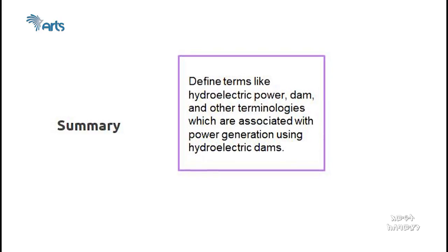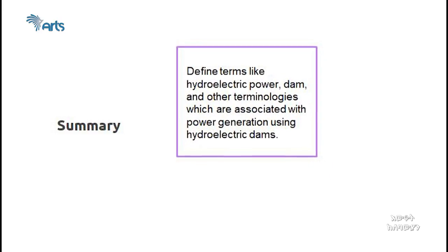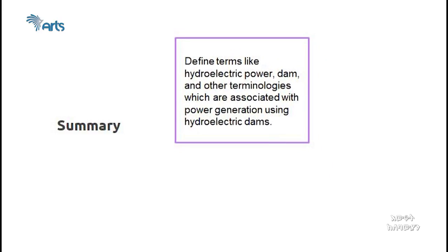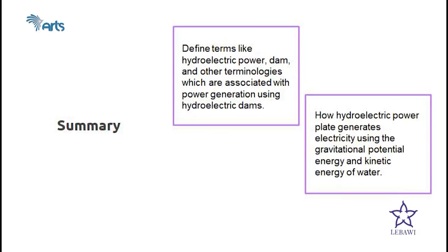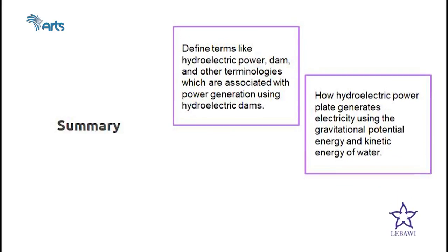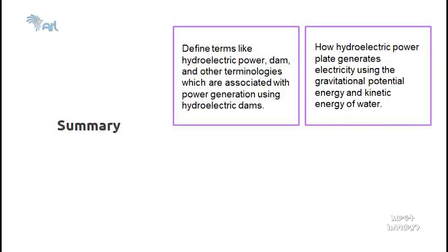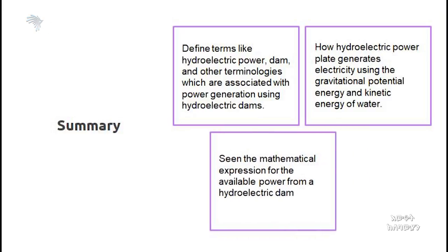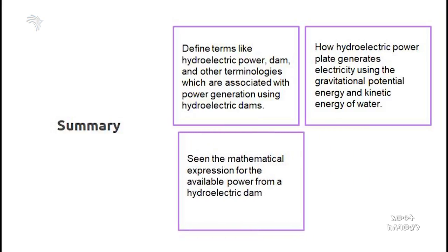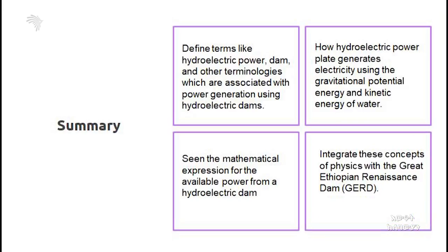Before finishing today's presentation, let's recap the important points. We defined terms like hydroelectric power, dam, and other terminologies associated with power generation using hydroelectric dams. We saw how hydroelectric power plants generate electricity using gravitational potential energy and kinetic energy of water, and examined the mathematical expression for available power. Finally, we integrated these physics concepts with the Grand Ethiopian Renaissance Dam. Thanks for watching, and goodbye everyone.